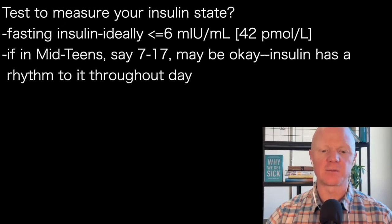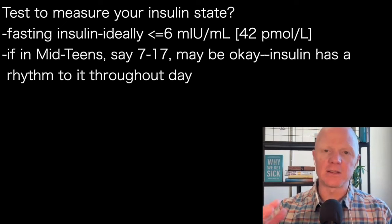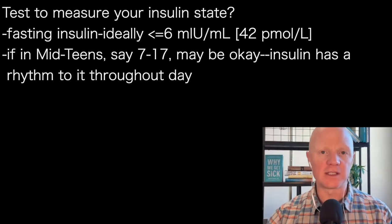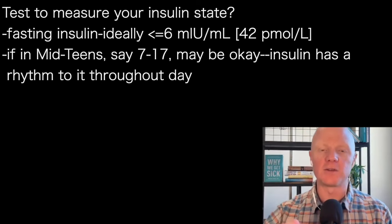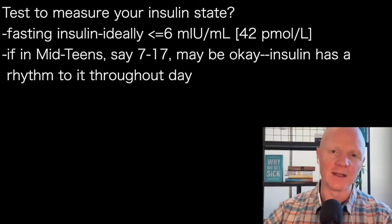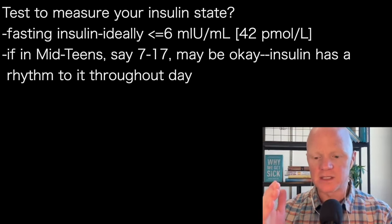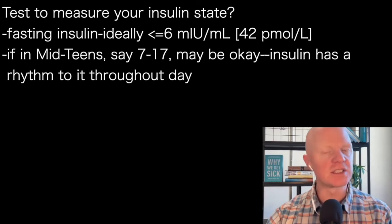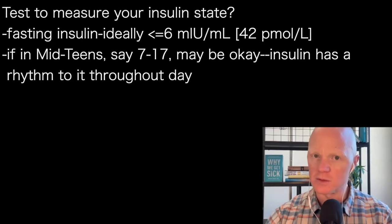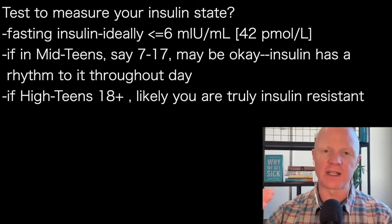Elevated insulin is a sign of insulin resistance because insulin has a rhythm to it, like so many hormones. It ebbs and flows throughout the day. To summarize the categories: if insulin is six or below, that's a really good sign you're insulin sensitive. If it's in the intermediate realm of 7 to 17, that suggests a problem but it's not absolute. And if it's high teens — 18 and above — it's very likely that you are in fact insulin resistant and you've detected a true problem.